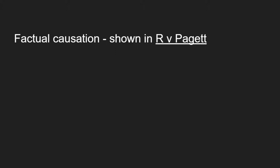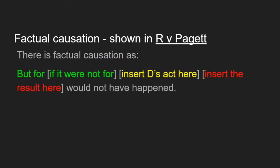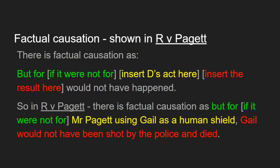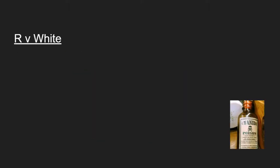The first thing to look at is factual causation, and you can do this by looking at the case of R v Padgett. The but for test is formulated starting with those words — but for — which means 'if it were not for.' You say what the defendant did and then say the result would not have happened. So in Padgett there is factual causation as: but for Mr Padgett using Gail as a human shield, Gail would not have been shot by the police and died. That is an example of how the but for test works and how you can show factual causation.